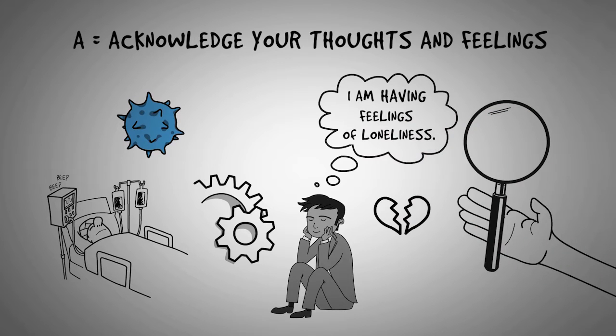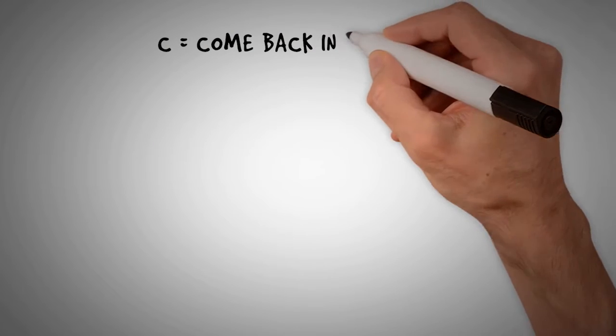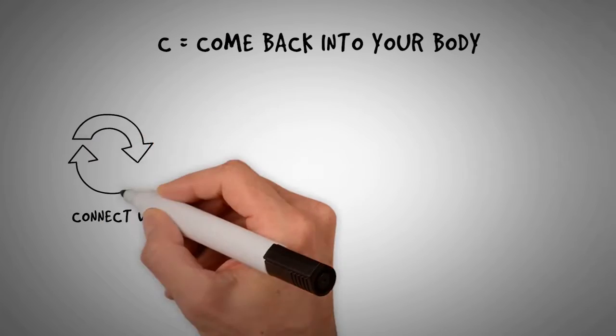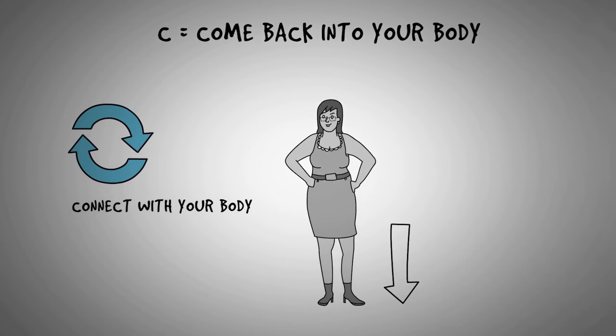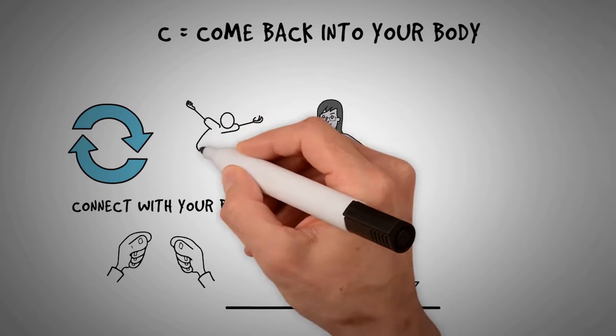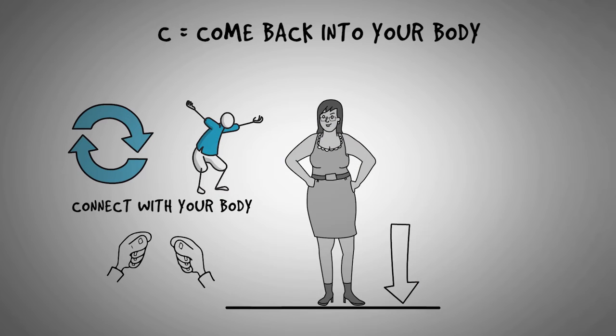And as you continue acknowledging your thoughts and feelings, bring in the next step, which is C. Come back into your body. Find your own way of connecting with your physical body. For example, you might try slowly pressing your feet hard into the floor or slowly pressing your fingertips together, slowly stretching your arms or your neck or shrugging your shoulders or slowly breathing.